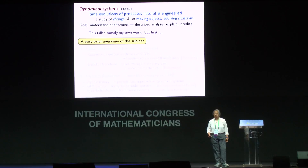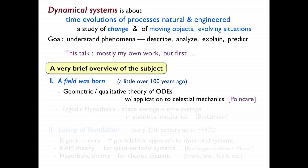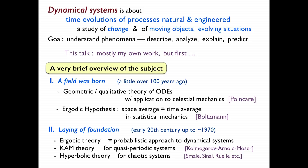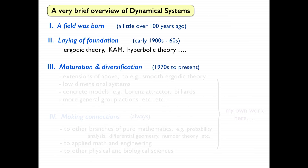Dynamical systems is, by now, a little bit over 100 years old. In many ways, it began with the work of Poincaré, who developed and pioneered the geometric or qualitative theory of ordinary differential equations and applied it to the study of celestial mechanics. It was also inspired by the ergodic hypothesis and other ideas from statistical mechanics, often attributed to Boltzmann from even earlier. The foundation of the field was laid in the early 20th century. The three main areas up to about the 1960s were ergodic theory, KAM theory, and hyperbolic theory — the study of chaotic dynamical systems pioneered by Smale, Sinai, Ruelle, et cetera.